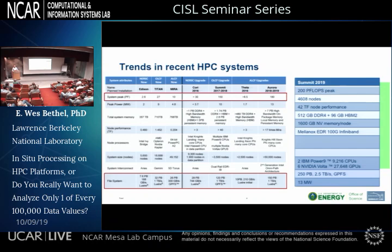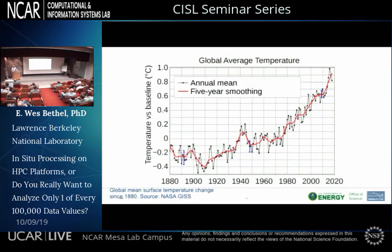Think for a second: what kind of science is going to result if you're analyzing one out of every 100,000 data points? Here's a contrived example that should strike a nerve. This chart pulled from Wikipedia shows global average temperature with five-year smoothing. What happens if you take just a couple of samples out of this and do some analysis? You get a different trend. This is what happens — and the same thing occurs across all aspects of science. This is serious business.